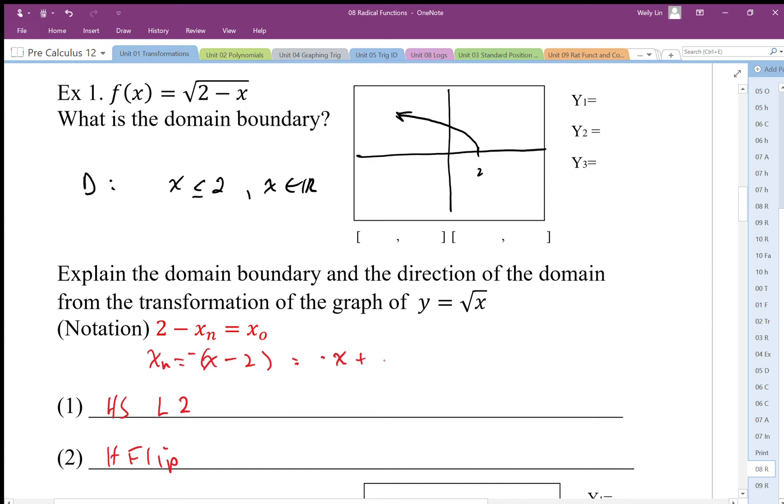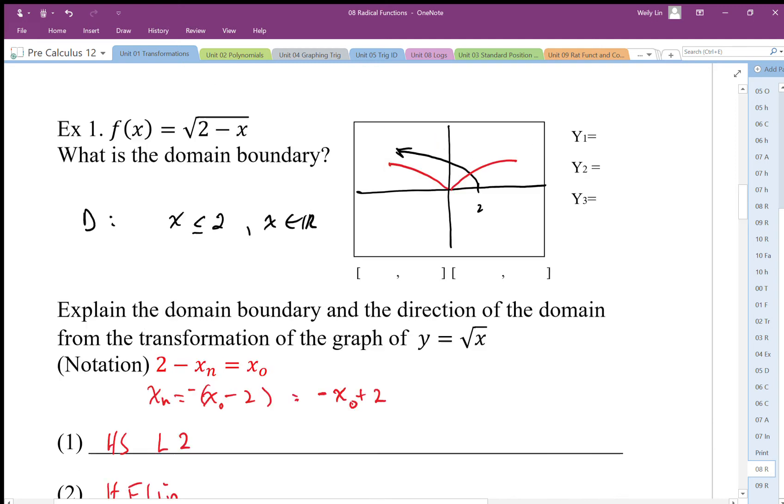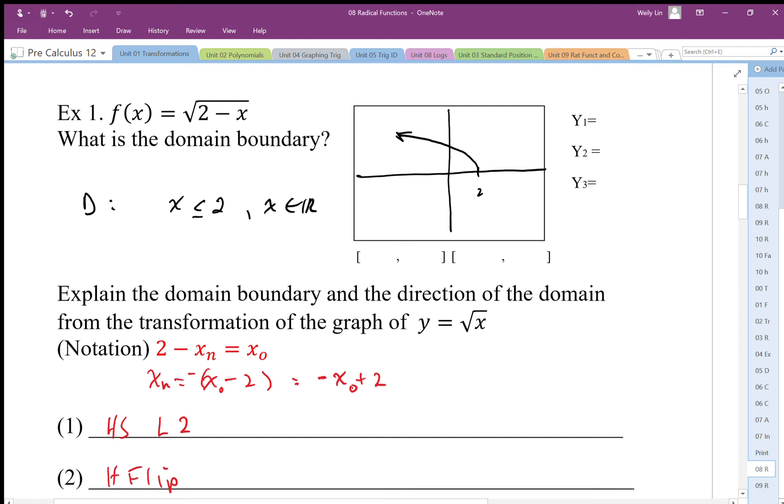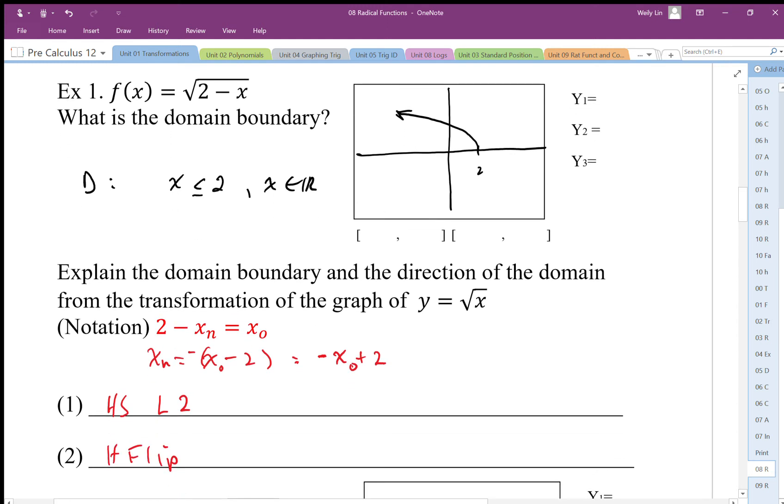And that might be a little bit easier way to understand it, because if I flip the original graph, I'm pointing in this direction, and then I shift it to the right. And that will give me to where the black graph is.